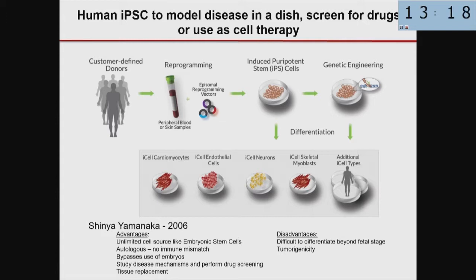They can in theory be matched to the person from whom they were taken. It's a non-invasive procedure to take blood or a little bit of skin, and there would be no immune mismatch — whereas with embryonic stem cells from a different donor you would need immunosuppression throughout life. It also bypasses the use and destruction of embryos, allows study of disease mechanisms, drug screening, and in theory provides a source of cells for tissue replacement. The disadvantages are that these cells, like embryonic stem cells, are difficult to differentiate beyond the fetal stage of gene expression, and they also have a tendency to be tumorigenic.